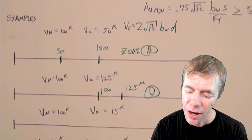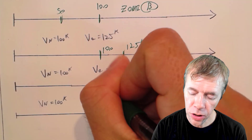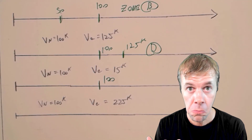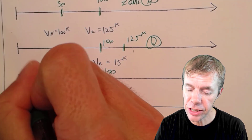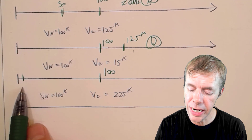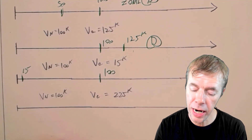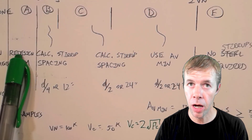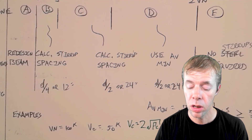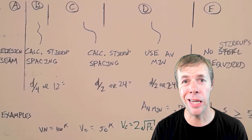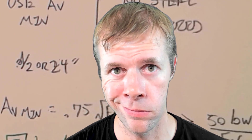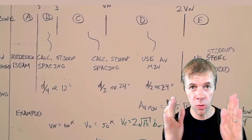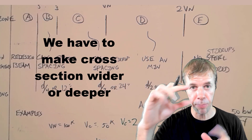One more — structural analysis still says 100 kips, but this time V sub C is only 15 kips. That is way down on the graph. We go up and, unfortunately, we land in the redesign zone — Case A. That means we need to increase our cross-section: make it wider or deeper to get more area.